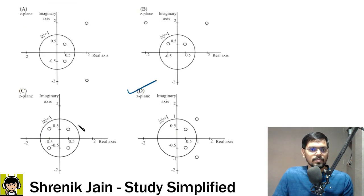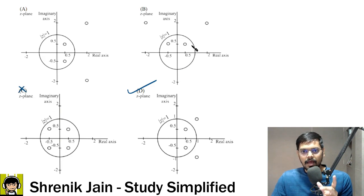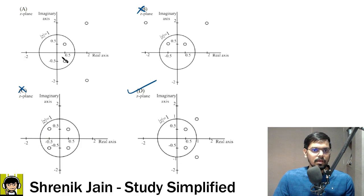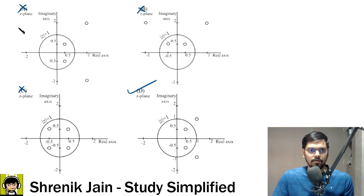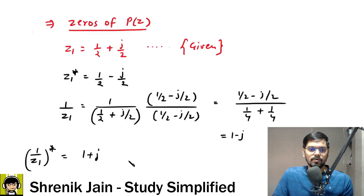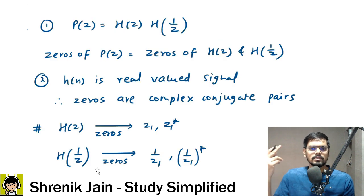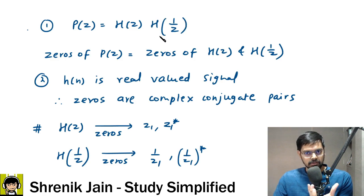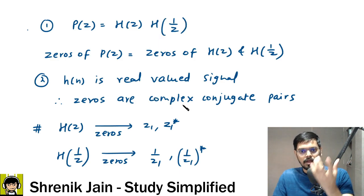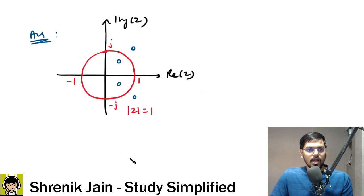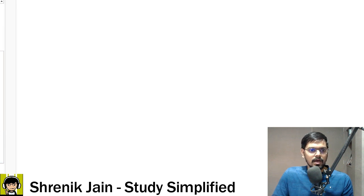Other options are wrong: one lacks 1+j, another has an incorrect zero position like −2, and another shows zeros at 2+2j rather than 1+j. The key insight was P(Z) is built from H(Z) and H(1/Z), H(N) is real-valued, so zeros come in complex conjugate pairs, making it easy to find all four zeros.